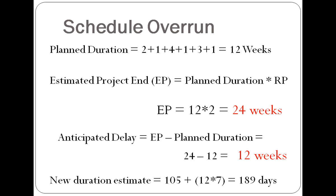To determine the schedule overrun based on the rate of performance of completed tasks, we first determine the planned duration of the project. This is done by summing the planned duration of each activity on the critical path. Since activities C and G are not on the critical path, they are omitted from this calculation. The planned duration was thus 12 weeks. The estimated project end or duration can be determined by multiplying the planned duration by the rate of performance, which comes out to 12 weeks times 2, for a total of 24 weeks. The anticipated delay is then 24 minus 12, which equals an anticipated delay of 12 weeks.